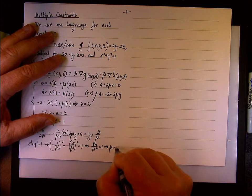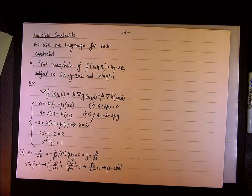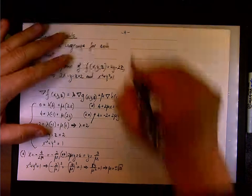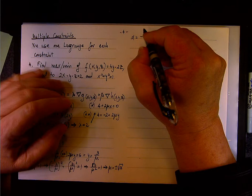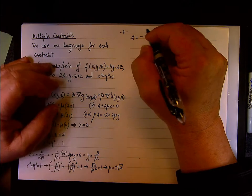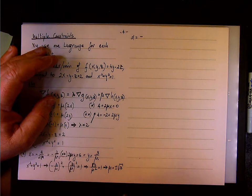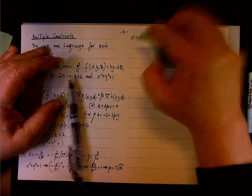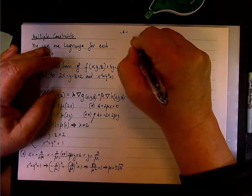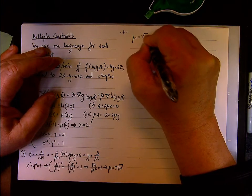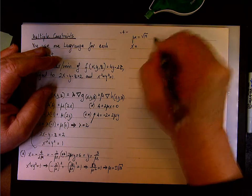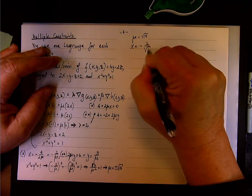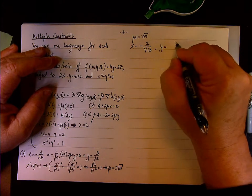Substituting into x squared plus y squared equals 1, we get (negative 2 over mu) squared plus (3 over mu) squared equals 1, which gives 4 plus 9 over mu squared, or 13 over mu squared equals 1. Therefore mu equals plus or minus square root of 13. Taking the positive value, mu equals positive square root of 13, so x equals negative 2 over square root of 13 and y equals positive 3 over square root of 13.